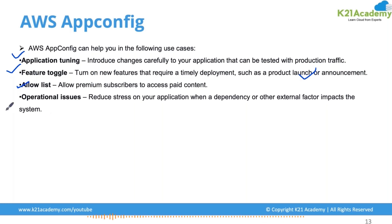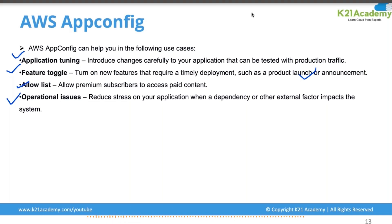App Config also reduces the stress on your application when a dependency or other external factor impacts the system. When configuration changes, dependency files, or packages are modified, it won't stress your application because it is managed separately using App Config. It ensures isolation is in place when a dependency or any external factor is impacted. App Config is part of Systems Manager and is used for configuration deployment.